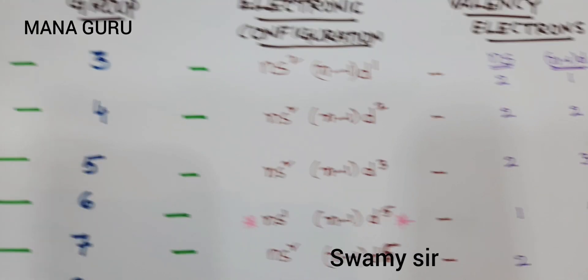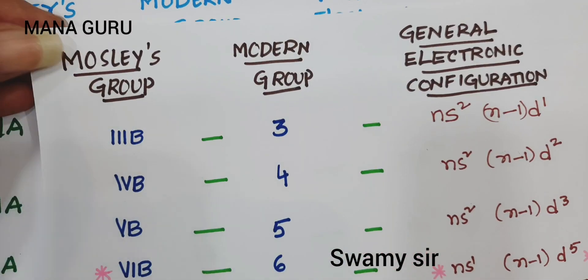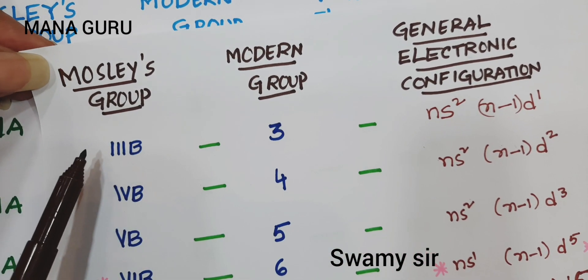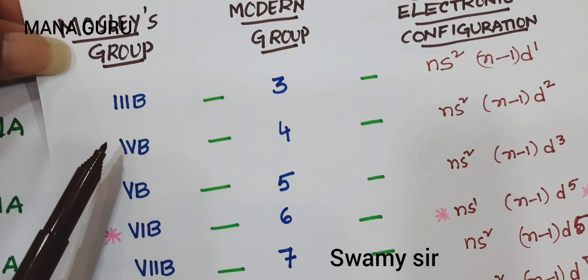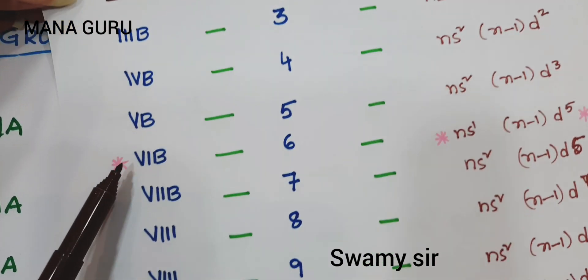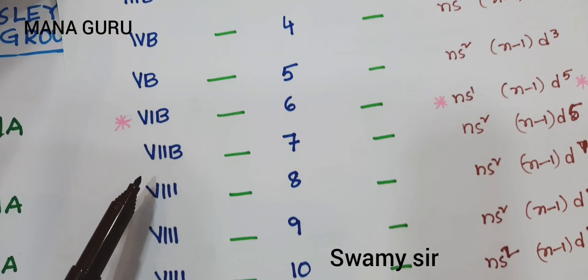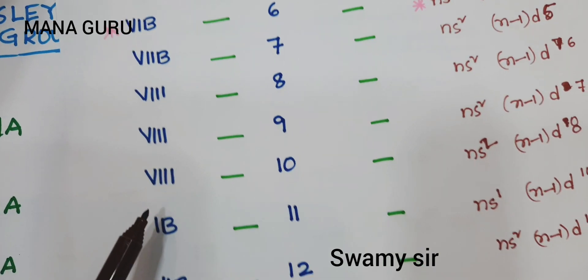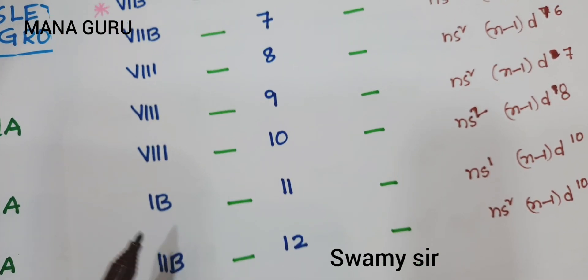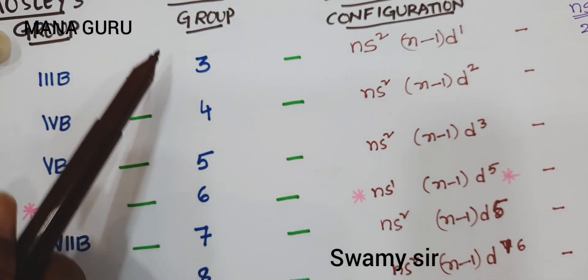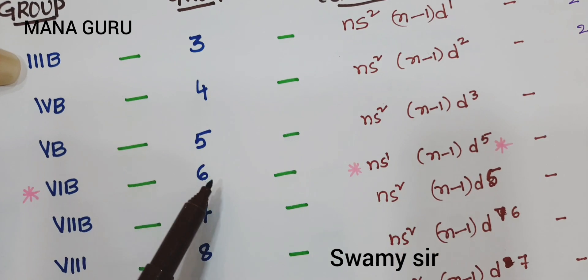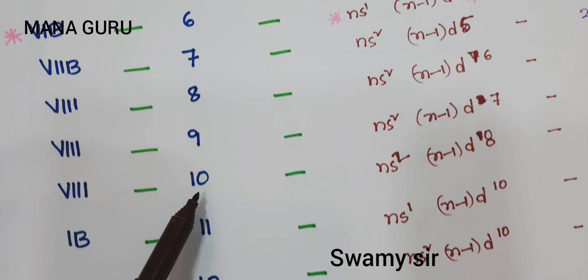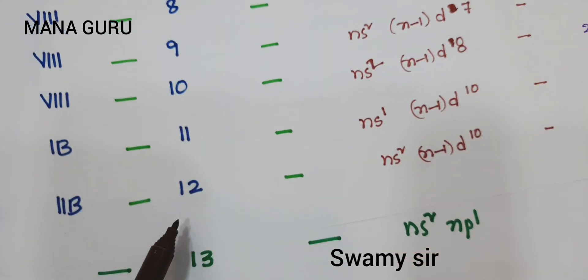Some more groups exist. In the Moseley periodic table, these group numbers are 3B, 4B, 5B, 6B, 7B, 8, 8, 8, 1B, 2B. In the modern periodic table, these groups are 3, 4, 5, 6, 7, 8, 9, 10, 11, 12. The general electronic configurations are NS2 (N-1)D1, NS2 (N-1)D2, NS2 (N-1)D3, and so on.